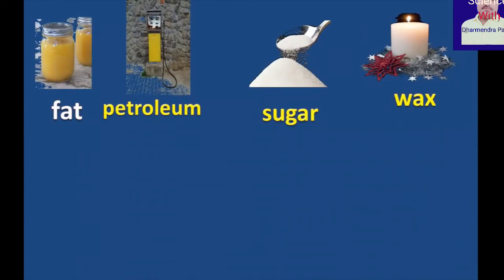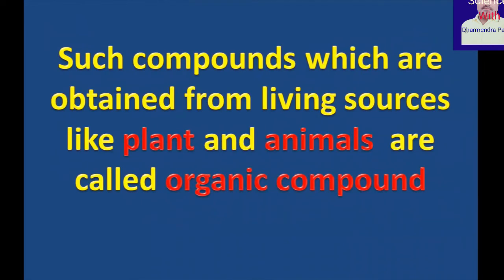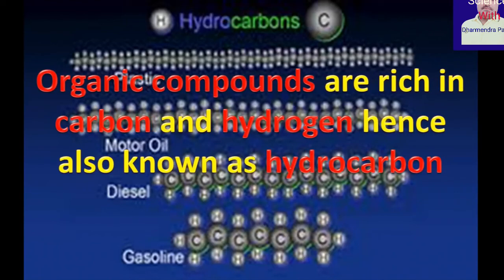Fat, petroleum, sugar, wax, alcohol, etc. — these are obtained from living sources like plants and animals. Such compounds which are obtained from living sources are called organic compounds. Organic compounds are rich in carbon and hydrogen, hence also known as hydrocarbons.